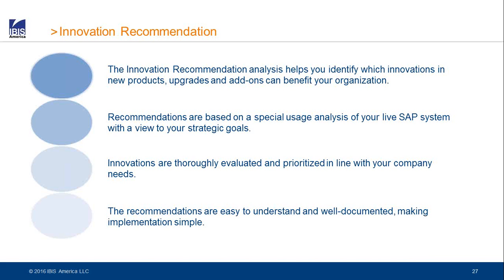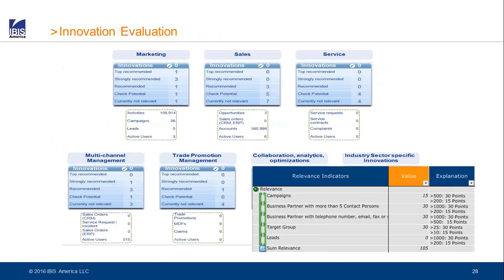With the detailed SAP audit, we have that detailed current as-is situation with usage information, all the alerting, the threshold values and so on. Then we assess and collect and document the strategic goals and provide a very detailed recommendation of what functionality should be leveraged and why. In the innovation recommendation space, here's an example for CRM. We classify the different innovation packages as top recommended, strongly recommended, and so forth, and we provide the information on which that classification is based.